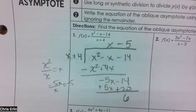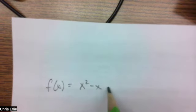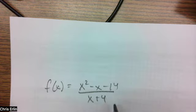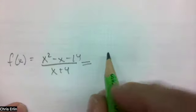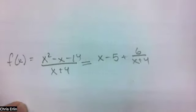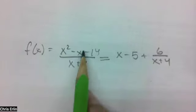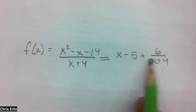So what does that mean overall? I could rewrite this entire thing as x minus 5 plus 6 over x plus 4. Those are equivalent things, right? If I divide this polynomial by this, I get this. This is the answer.